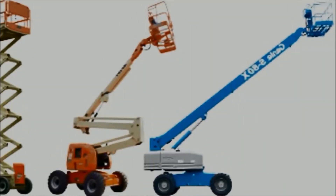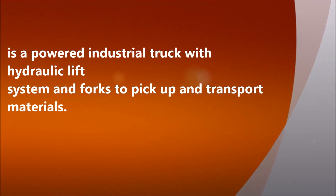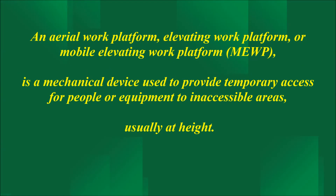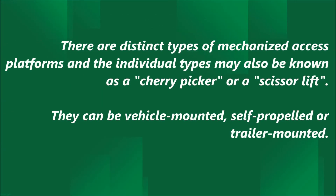A mobile elevating work platform, or MEWP, is a mechanical device used to provide temporary access for people or equipment to inaccessible areas, usually at height. There are distinct types of mechanized access platforms; the individual types may also be known as a cherry picker or a scissor lift. They can be vehicle mounted, self-propelled, or trailer mounted.